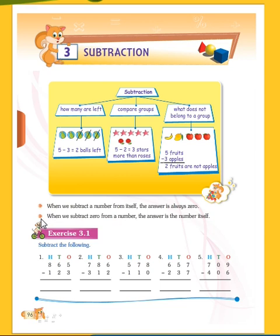When we subtract zero from a number, the answer is the number itself. For example, if you have five rupees and you give zero rupees to someone, zero means you didn't give any money — so you still have five rupees. Five minus zero equals five. If we subtract zero from any number, we get the same number. I hope you understand these points. Thank you.